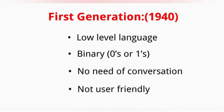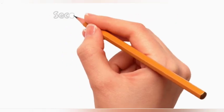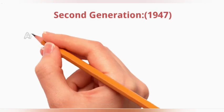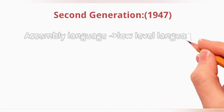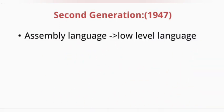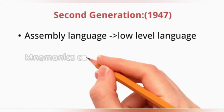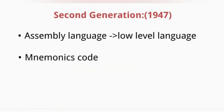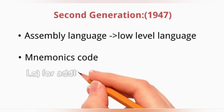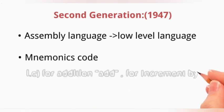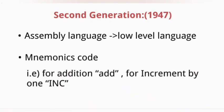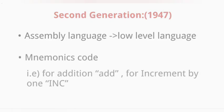Next, we see the second generation. After seven years, the next generation language was developed: assembly language. This also comes under the category of low-level language. Here, programs were written using the concept of mnemonic codes. It means operations can be named in abbreviated form: for addition 'add', for increment by one 'inc'.